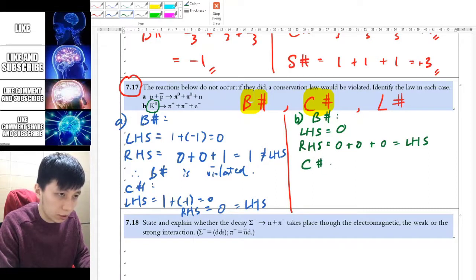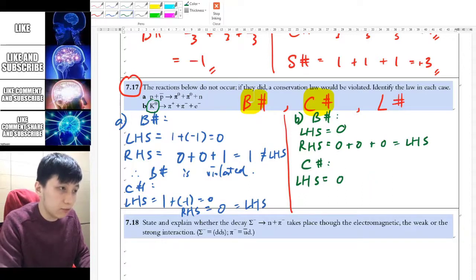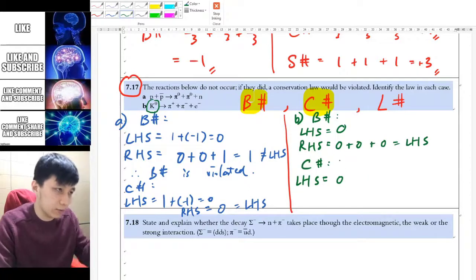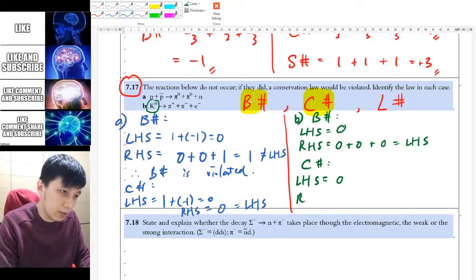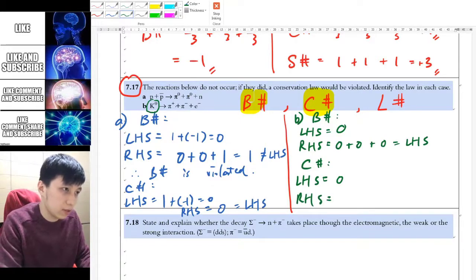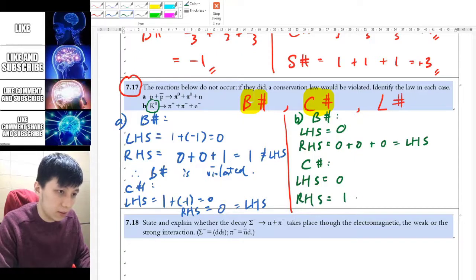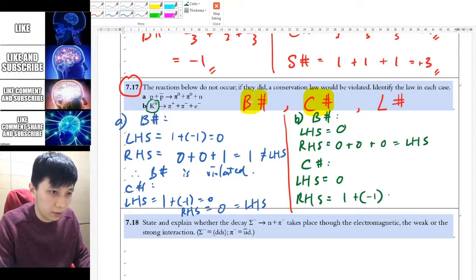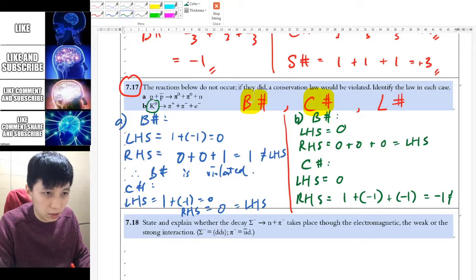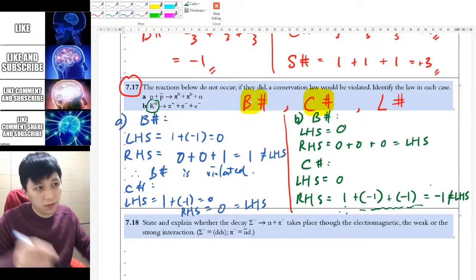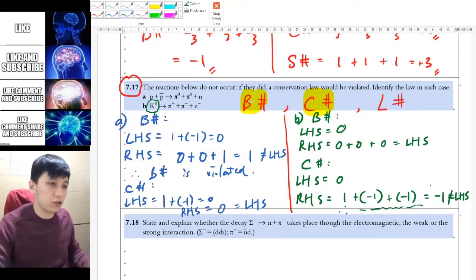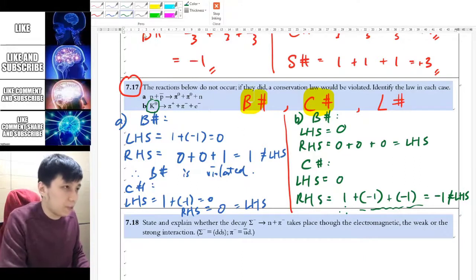Now let's go for charge number. For left-hand side, it's neutral—as you can see, it's K0, so 0 means neutral here. Right-hand side, we've got positive 1 and negative 1 for these two pions. Then for electron is, of course, negative 1 also. Eventually, you have negative 1, which does not equal left-hand side. You can say the conservation of charge is violated.